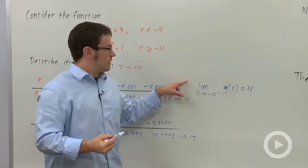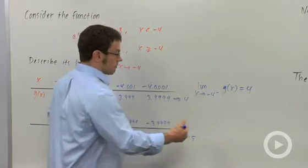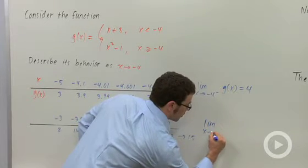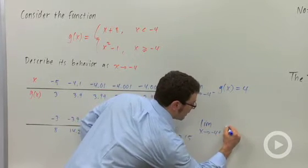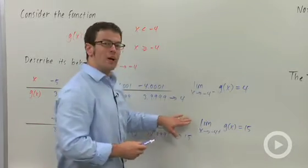This is the left-hand limit. The left-hand limit is one of the one-sided limits for g of x at 4. And then we say limit as x approaches negative 4 from the right of g of x is 15. This is the right-hand limit.